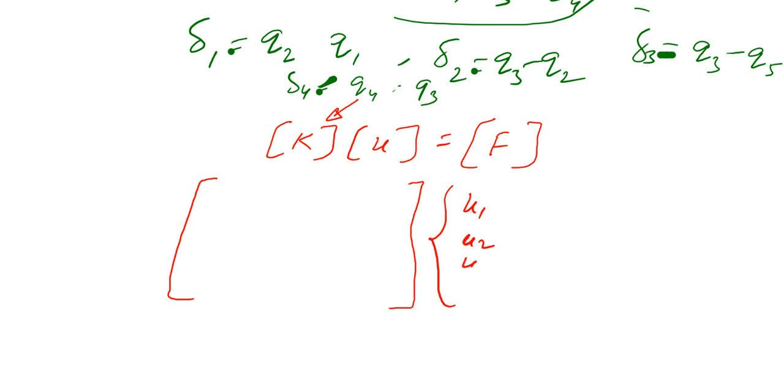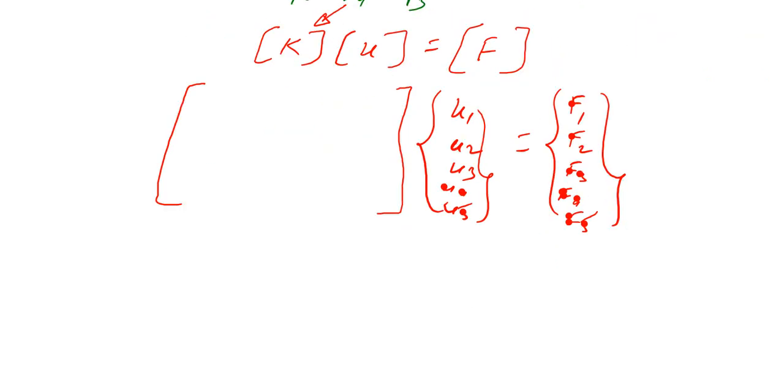This is the general method. There will be a global stiffness matrix. You have to apply the boundary condition. The first row and first column will cancel, and the last row and last column. You will get the remaining 3 by 3 matrix. After that you will get 3 equations. You will find U2, U3, U4 by using the equations. This is the method to apply the total potential energy equation. Thank you.